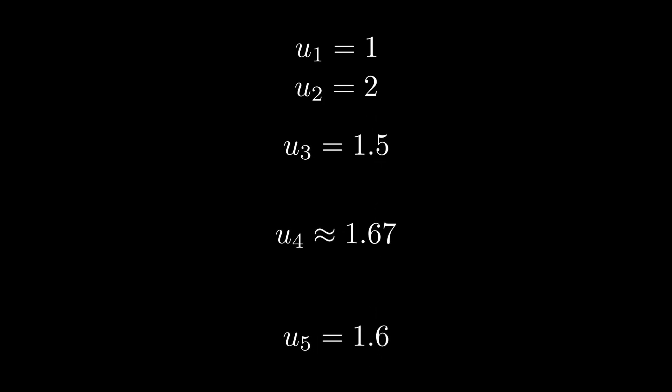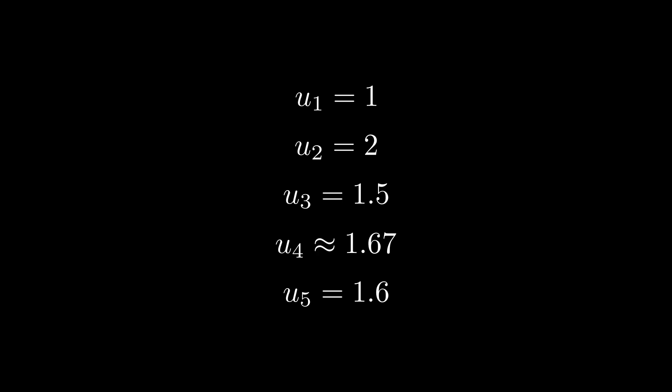We discussed earlier that we could assume that this solution would lie somewhere between 1 and 2, since even from the first couple terms, it seems to be approaching some value. To make this trend even more clear, we can use terms even further in the sequence to determine a trend. Let's consider u(5), 10 and 20.